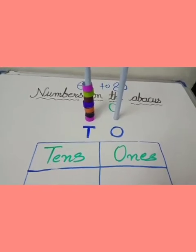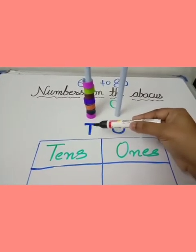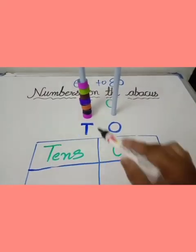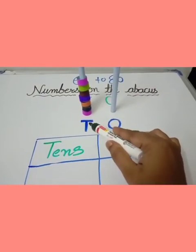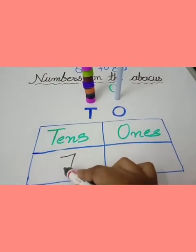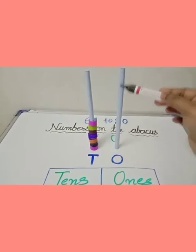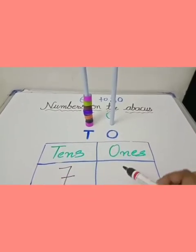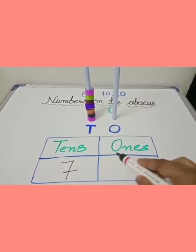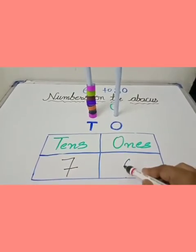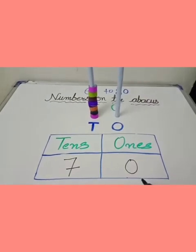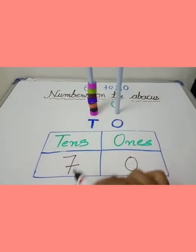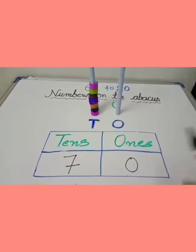Let's do one more. Count the tens place rings: 1, 2, 3, 4, 5, 6, 7 — 7 rings on the tens place, so write down 7. Now look at the ones place — there is no ring on the ones place, meaning nothing. So, write 0 on the ones place. We get the number 70 on the abacus tool. Tens place: 7, ones place: 0.